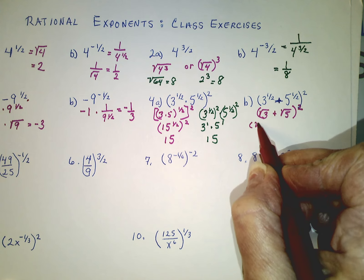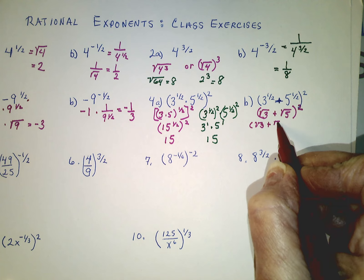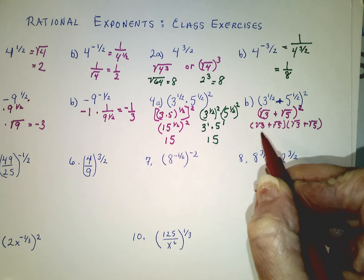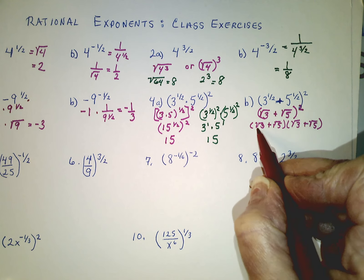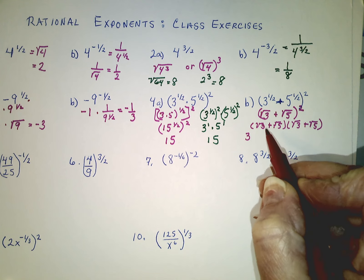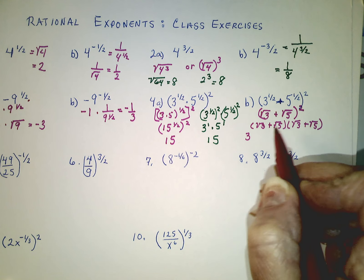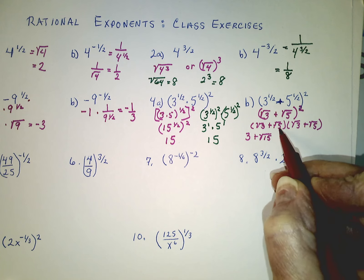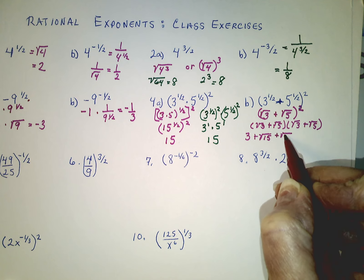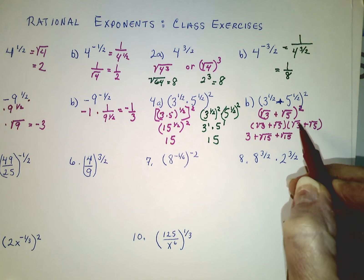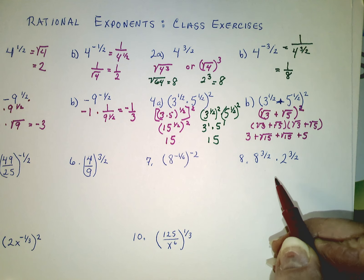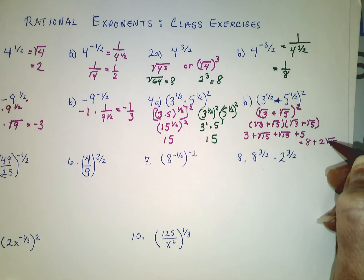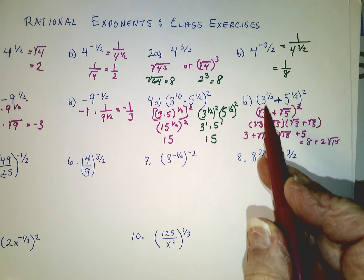But if we decided to keep going, we'd have the square root of 3 plus the square root of 5, times the square root of 3 plus the square root of 5 — we'd have to do double distributive. The square root of 3 times the square root of 5 equals the square root of 15. The square root of 5 times the square root of 5 is 5. So we would end up with 8 plus 2 times the square root of 15 — definitely not the same as squaring each one separately.